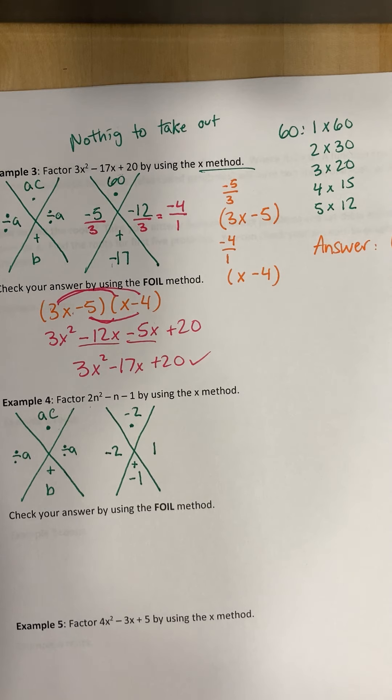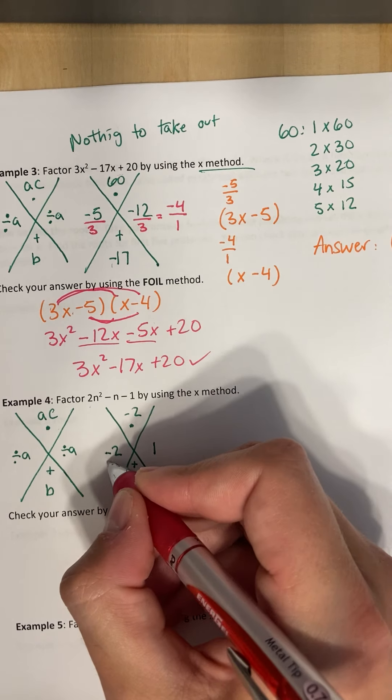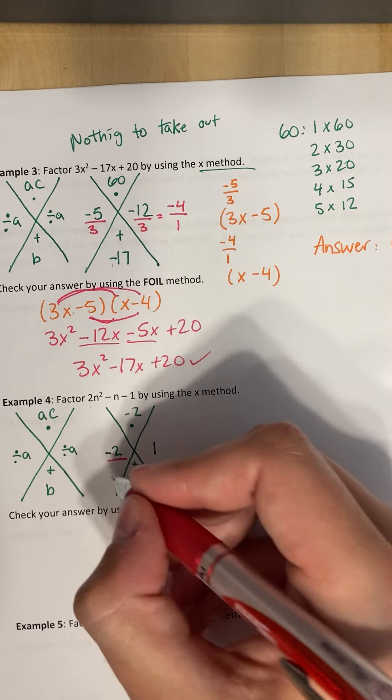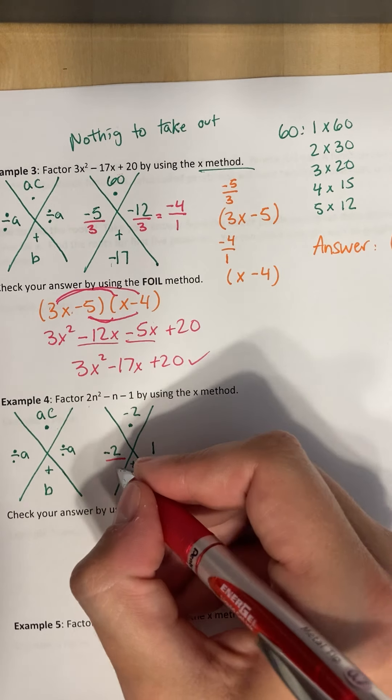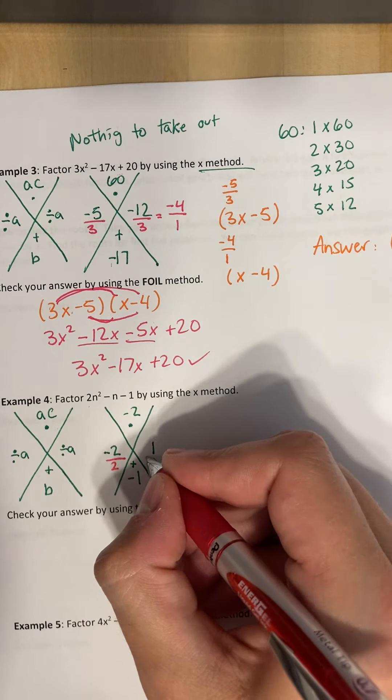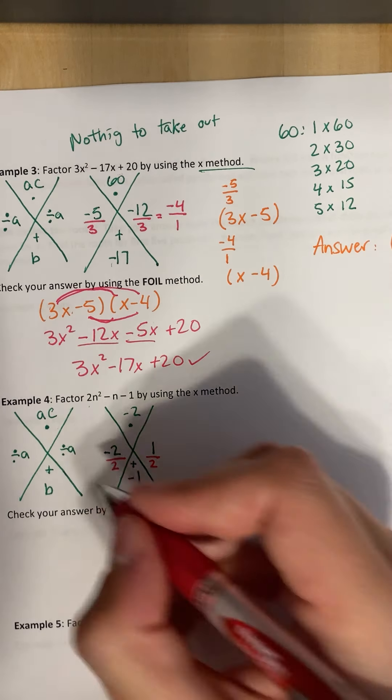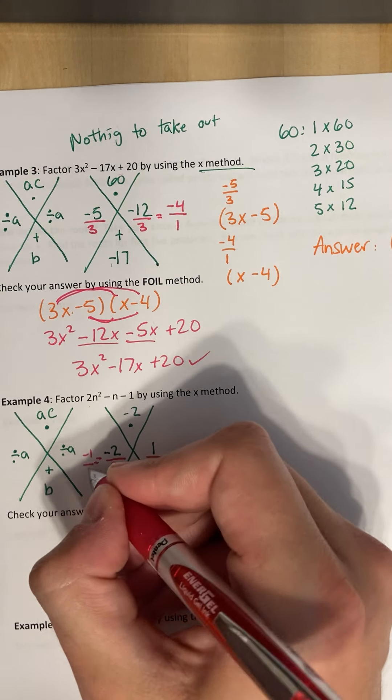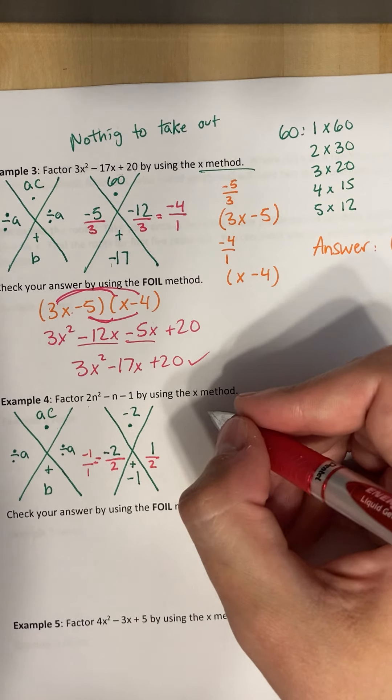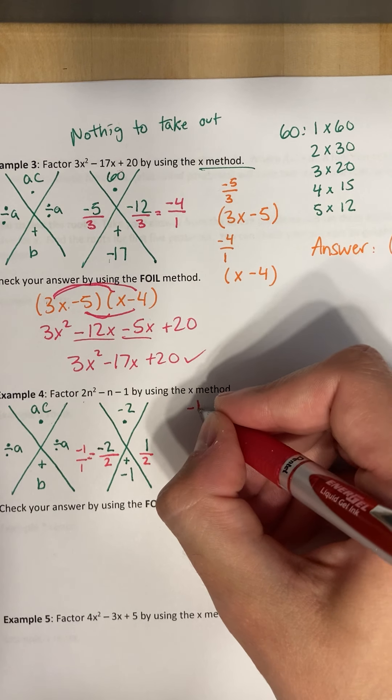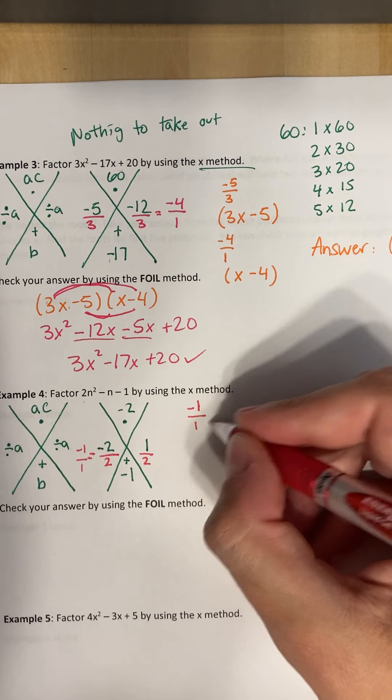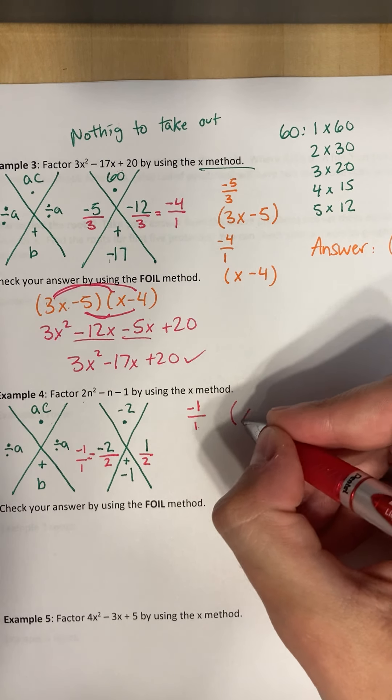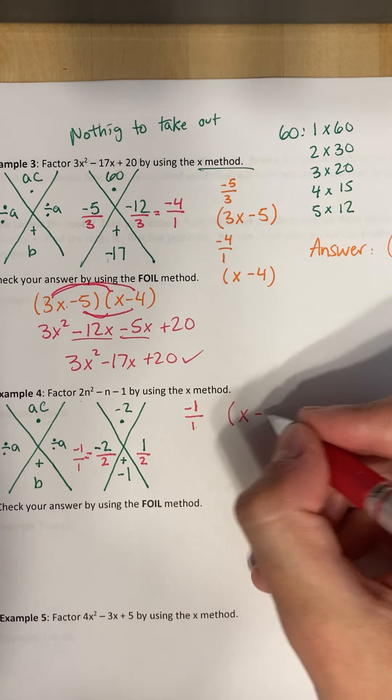So now that we've got our two numbers, I can divide this by a. So I'm going to divide this by, what did we say a was? A was two, so I'll divide this by two. I'll divide this by two. I can simplify this to be negative one over one. So if I take negative one over one, and then I write that with my term, I'm going to do the bottom one first, so that's going to be x, and this will be minus one.